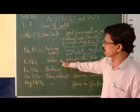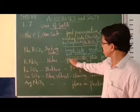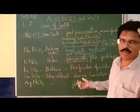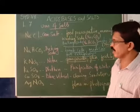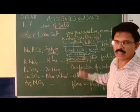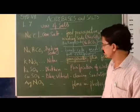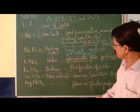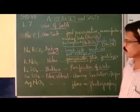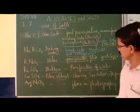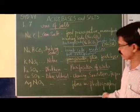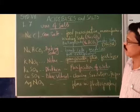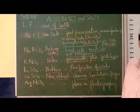Potassium nitrate, otherwise called nitre, is used mainly in making gunpowder for bullets and fireworks, in glass industries, and in fertilizer industries. Silver nitrate is used in making photographic film. These are the common uses of salts.